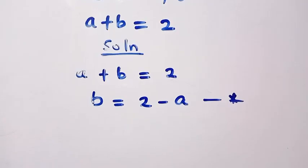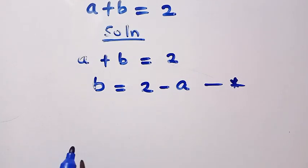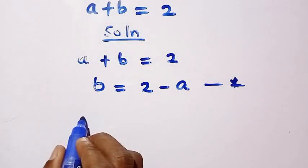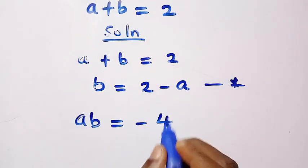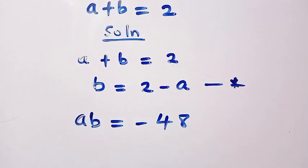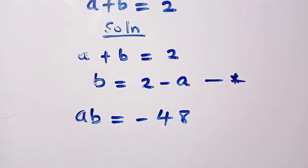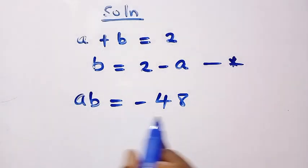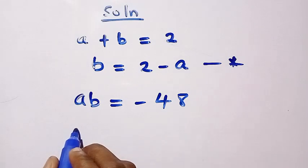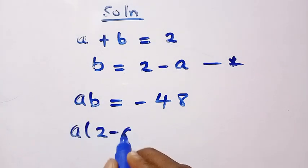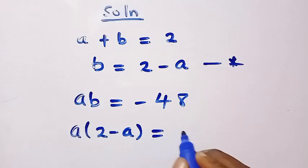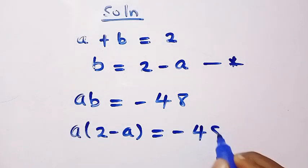Then let's substitute it into equation 1. We have equation 1 as ab equals minus 48, and by replacing b with 2 minus a and substituting it in this first equation, we have a times bracket 2 minus a equals minus 48.